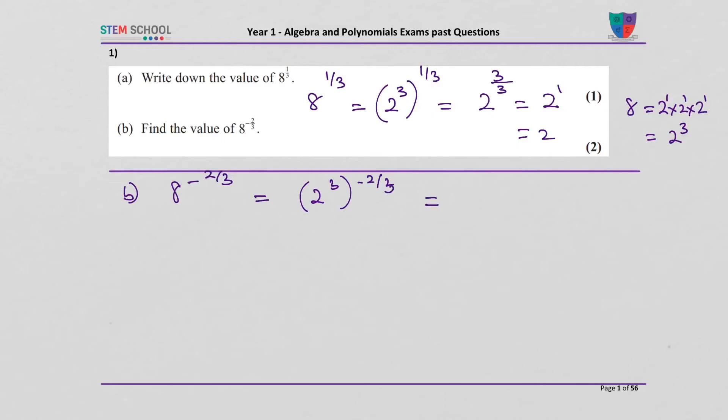That gives 2 to the power of 3 times minus 2 over 3. The 3s cancel, so you get 2 to the power of minus 2.